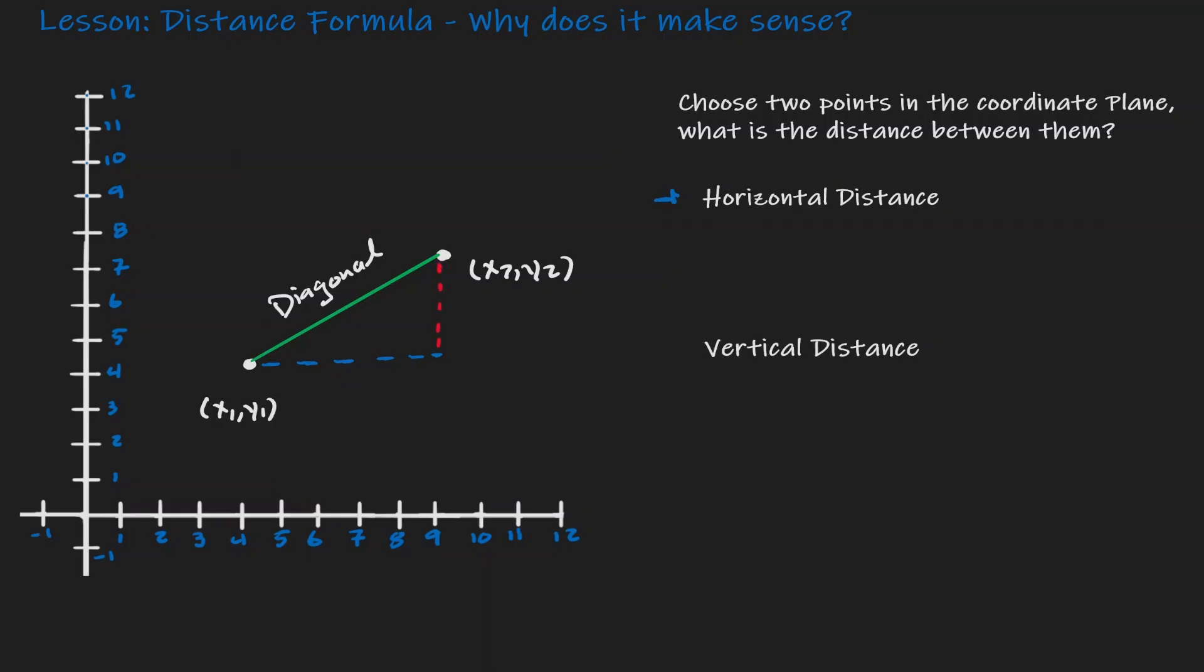Now that blue line that we have in there, that's what we can refer to it as the horizontal distance, and that red line that we see in there, that's what we refer to it as a vertical distance. Now what's the length of each of these distances? To find the length of the horizontal distance, I can find the difference between the x values. So we can write that down as x2 minus x1. To find the length of this vertical distance, well that's the same as the difference of the y values, which is y2 minus y1.